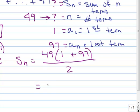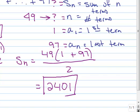And if you calculate that out watching your order of operations, you get 2,401. So that's the sum of that series, and that's the end of this lesson.